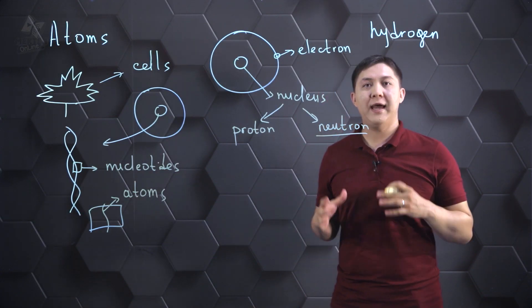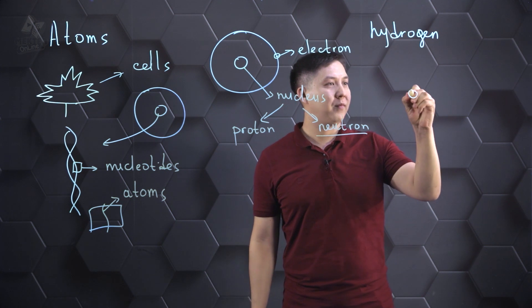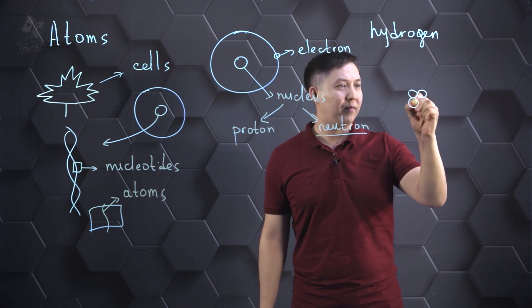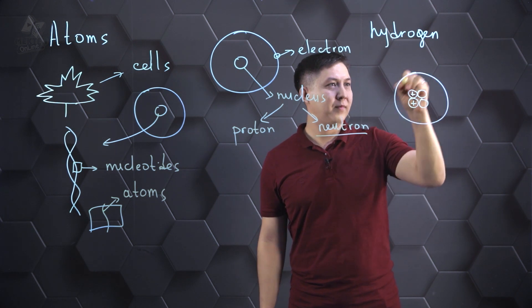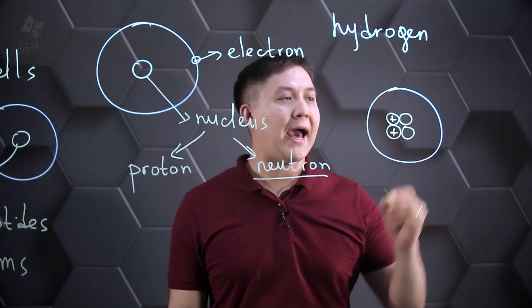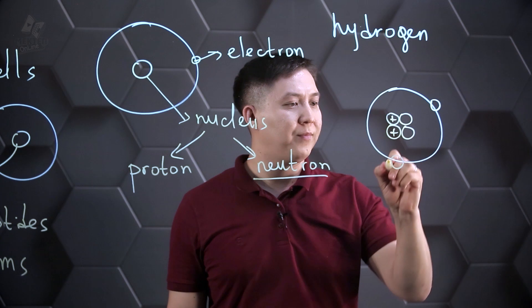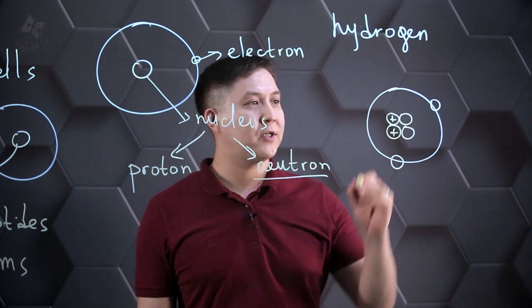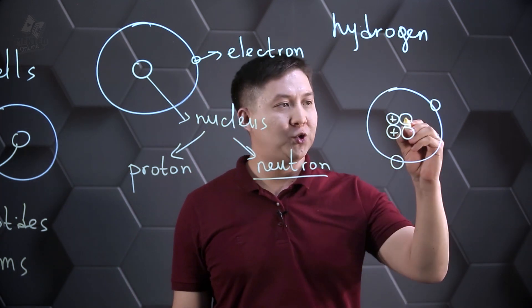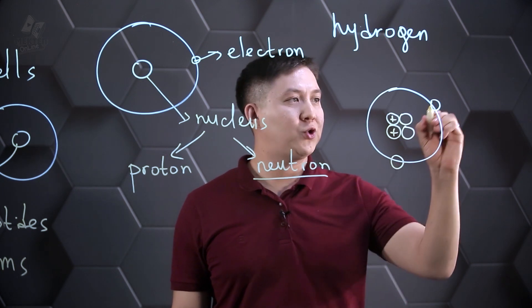Let's draw another type of atom. So, this is the atom of helium. It has two protons, two neutrons and two electrons.